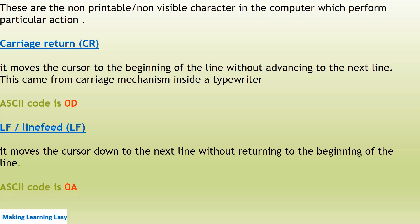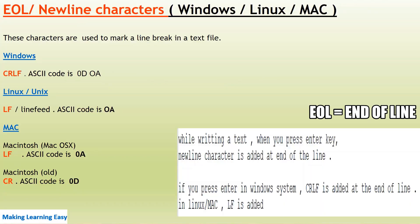Line feed (LF) is used to move the cursor down to the next line without returning to the beginning of the line. The ASCII code is 0A in hexadecimal. Different operating systems use these characters differently to perform some action, and these are known as new line characters.